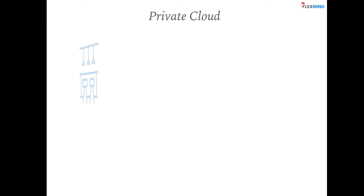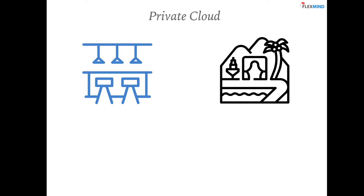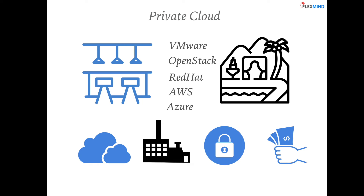Now let's look at private cloud. Technically, there is not much difference from public cloud. Think of public cloud as a bar open to everyone, and private cloud as a party with a closed group, managed by a company or individual. Private cloud is managed by a single organization and may exist only for private use. It may exist in the cloud or on-premise using technologies like VMware, OpenStack, Red Hat, AWS, or Azure. It is more customizable and more secure, though it does cost a little more.